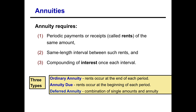Annuities are periodic payments or receipts, which may be called rents, of the same amount, with the same length interval between these payments, and compounding of interest once each interval. The important part here is to remember that the difference between a lump sum and an annuity is that a lump sum is a one-time payment, while an annuity is the same amount paid over the life of the instrument.